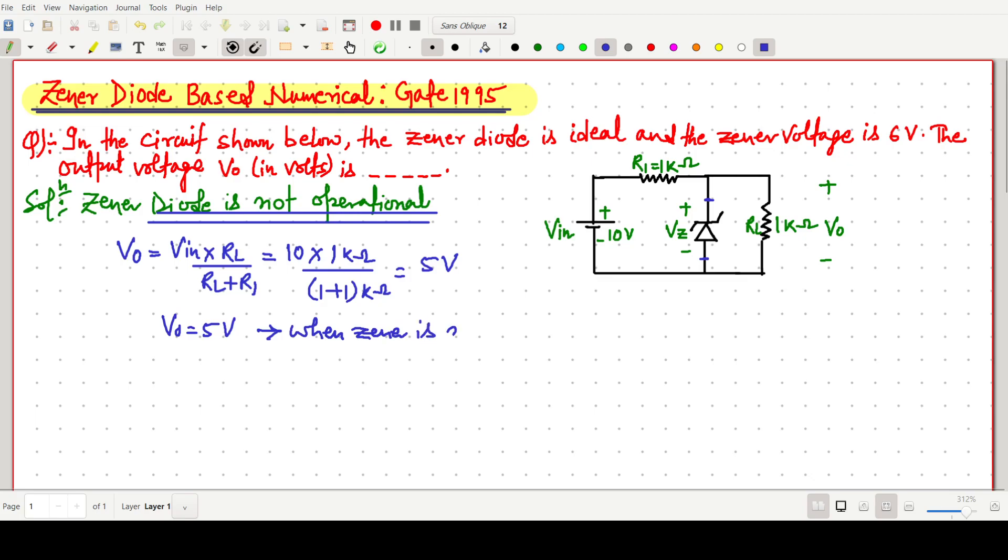When Zener is not operational. But when Zener is operational, this V0 will be same as that of VZ. V0 equals to VZ, which is 6V. V0 when Zener is operational.